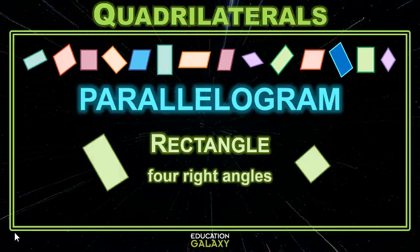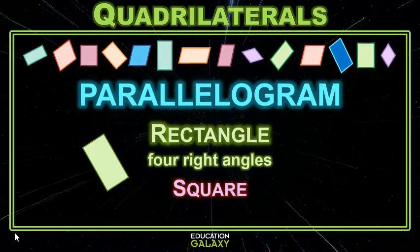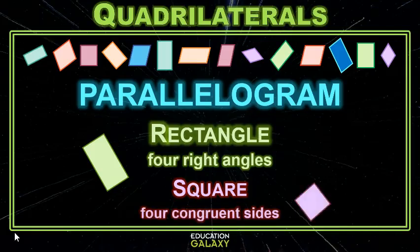A rectangle has four right angles. Now, we know that there's a special kind of rectangle called a square. And a square is special because not only does it have four right angles, not only is it a parallelogram and a quadrilateral — it has four congruent sides.